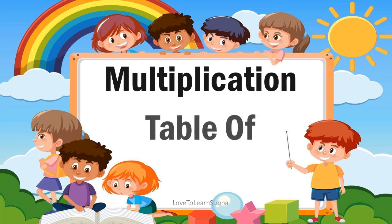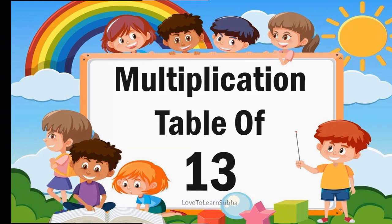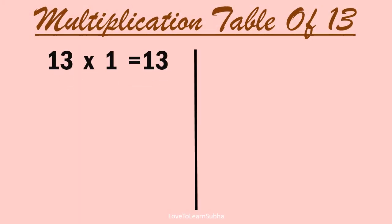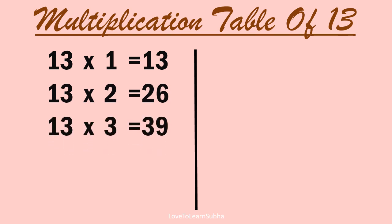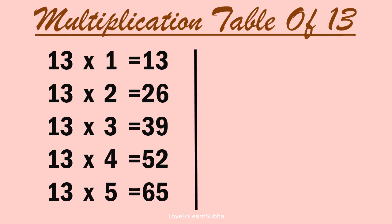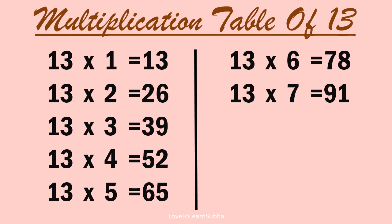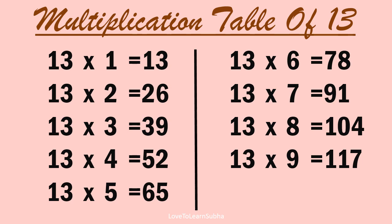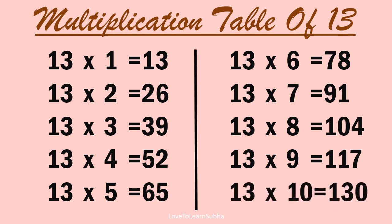Multiplication table of 13. 13 1s are 13, 13 2s are 26, 13 3s are 39, 13 4s are 52, 13 5s are 65, 13 6s are 78, 13 7s are 91, 13 8s are 104, 13 9s are 117, 13 10s are 130.